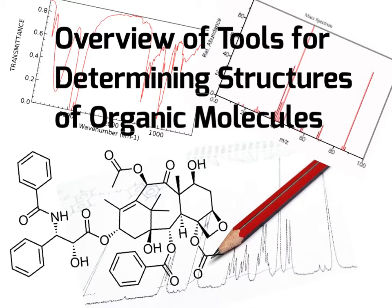In general, IR, mass spectrometry, and NMR are used together in order to piece together the structure of complex organic molecules. Let's take a look at an overview of these three main types of tools that we will use to determine structures of organic molecules, looking at what each one measures and the key pieces of information that each will provide. So those three main tools are IR, MS, and NMR.